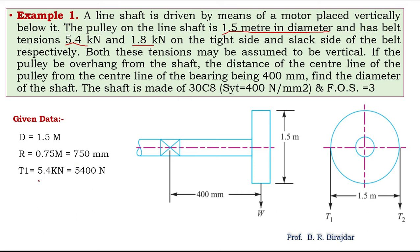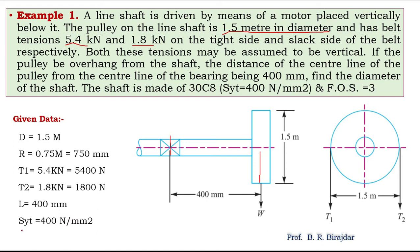T1, the tension in tight side, is 5.4 kN, which we convert into Newtons to get 5400 N. T2, the tension in slack side, is 1.8 kN, equal to 1800 N. The overhanging distance — the length from the bearing to the center of the pulley — is 400 mm.